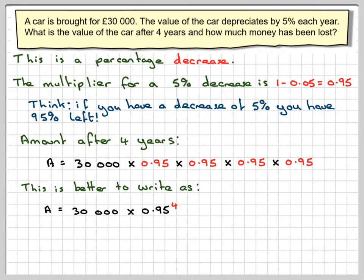And then you can work that out on your calculator, giving it correct to two decimal places because we're dealing with money. So this will become £24,435.19.